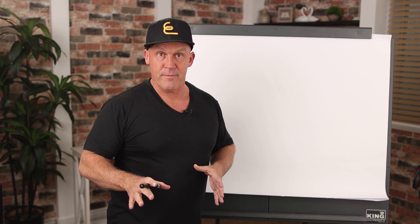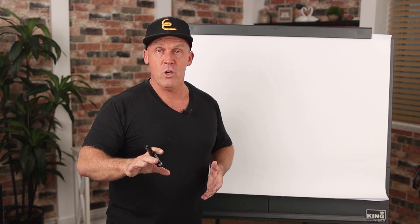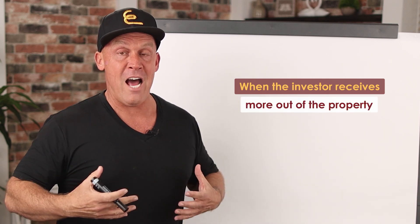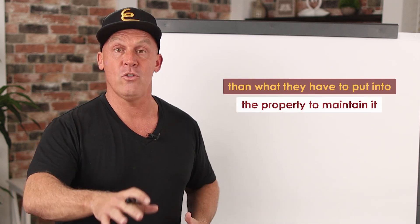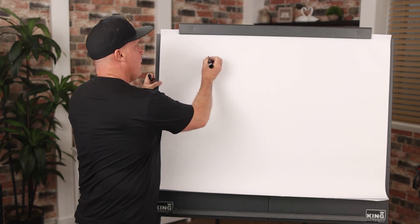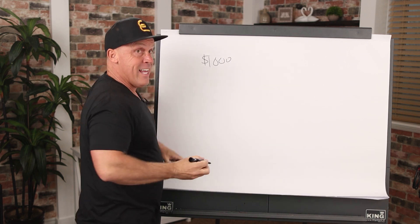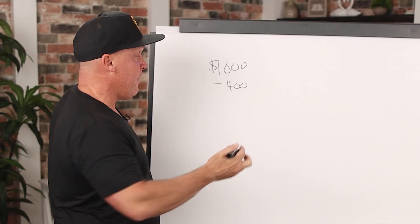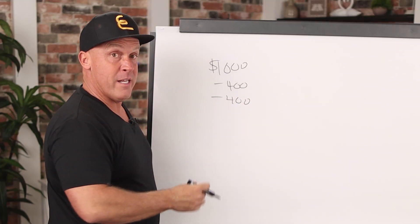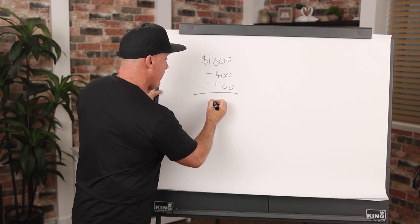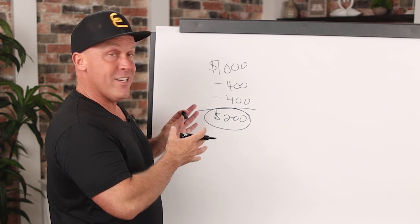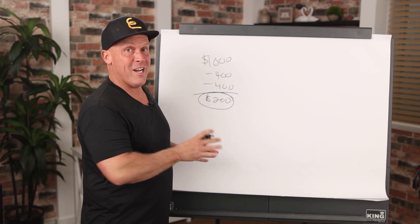What is cash flow in real estate specifically? Positive cash flow should be the goal of any long-term real estate investment. Positive cash flow is when the investor receives more out of the property than what they have to put into it to maintain it. So if you receive $1,000 a month from your property, then take out $400 for expenses — taxes, insurance, maintenance — and another $400 for the mortgage payment, you're left with $200. That's your cash flow. But keep in mind, this is a simple illustration; there's a bit more to it in real life.